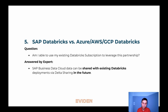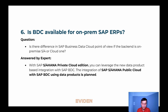Question number five — my favorite one. Will customers be able to use SAP data products not only inside SAP Databricks, but also with their existing implementations of Databricks running in Azure, AWS, or GCP? The good news is that it will be possible. The SAP data products will start being available in SAP Databricks, and then in the future SAP promised to make them available through delta sharing in Databricks on Azure, AWS, and hopefully GCP as well.